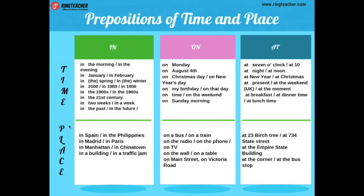Para lugar, esta preposición in: in Spain, in the Philippines, in Madrid, in Paris, in Manhattan, in Chinatown. Para describir un lugar específico: en España, en Filipinas, en Madrid, en París, y así sucesivamente.